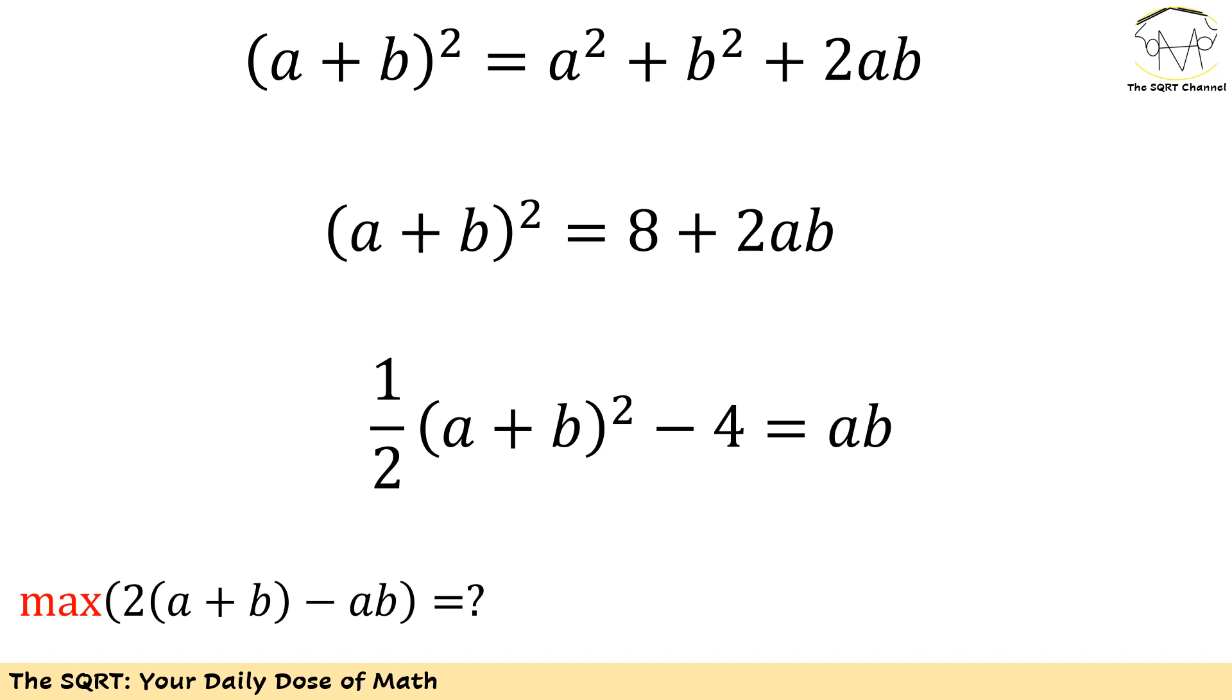Let's use the identity that you are seeing here. On the left hand side I have a plus b to the power of 2, and on the right hand side I have a squared plus b squared plus 2 times ab. Now I already know that a squared plus b squared is 8. Replacing that is going to help me find the value that I have for ab based on a plus b. It's going to be half of a plus b to the power of 2 minus 4.